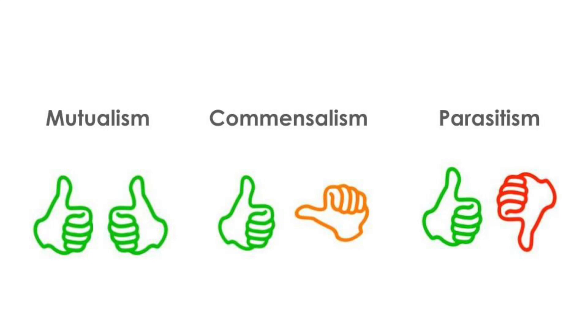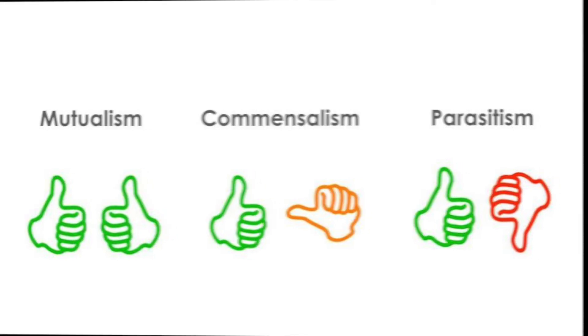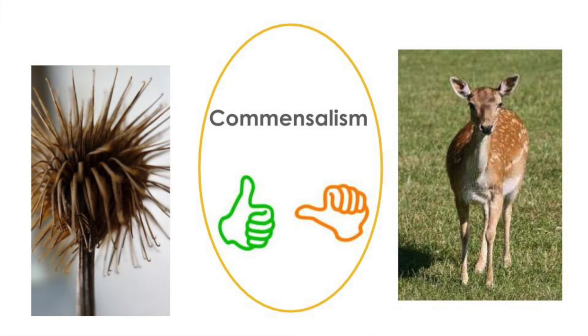What type of symbiosis might it be? Check your answer: the plant benefits while the animal doesn't benefit or get hurt by it — this is an example of commensalism. Good job on testing your symbiosis knowledge! We encourage you to keep looking out for more examples.